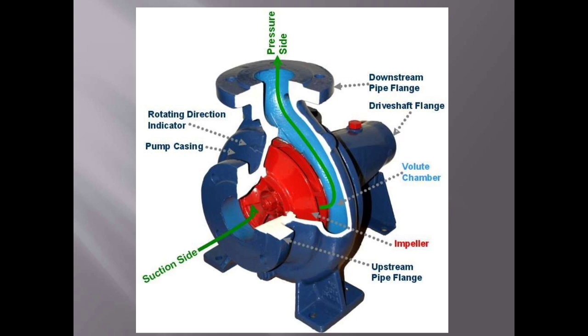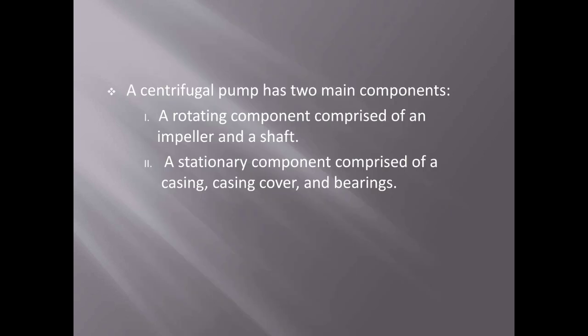A centrifugal pump has two main components. A rotating component comprised of an impeller and shaft. And a stationary component comprised of a casing, bearing, different pipes, etc.